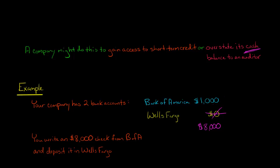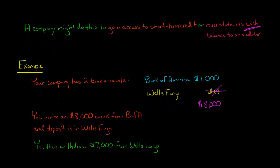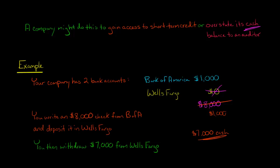Now they have $8,000 in the Wells Fargo account. Wells Fargo might not allow them to withdraw the entire amount, so maybe they take out $7,000, leaving $1,000 in Wells Fargo. They now have $7,000 cash today that they didn't have before. Maybe the company was on the verge of bankruptcy, and they turned to this scheme to pay off one of their creditors.